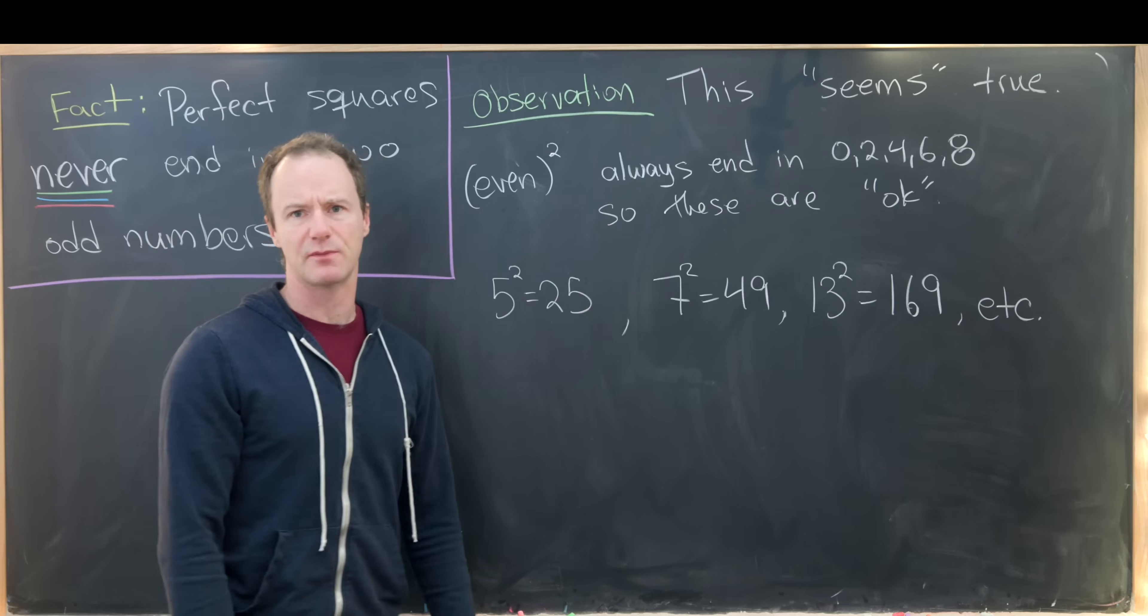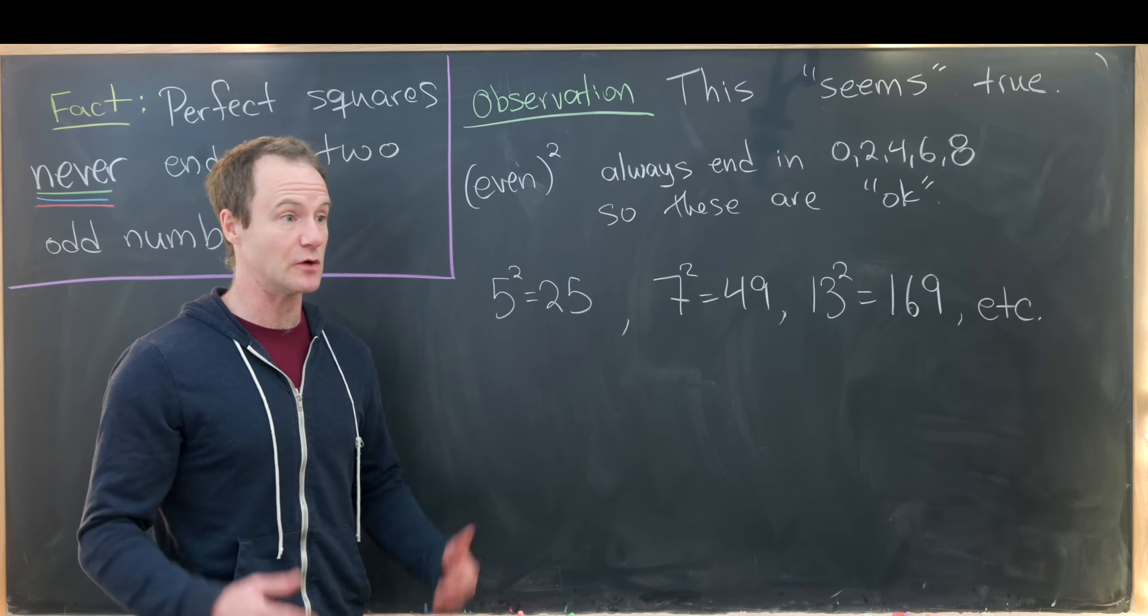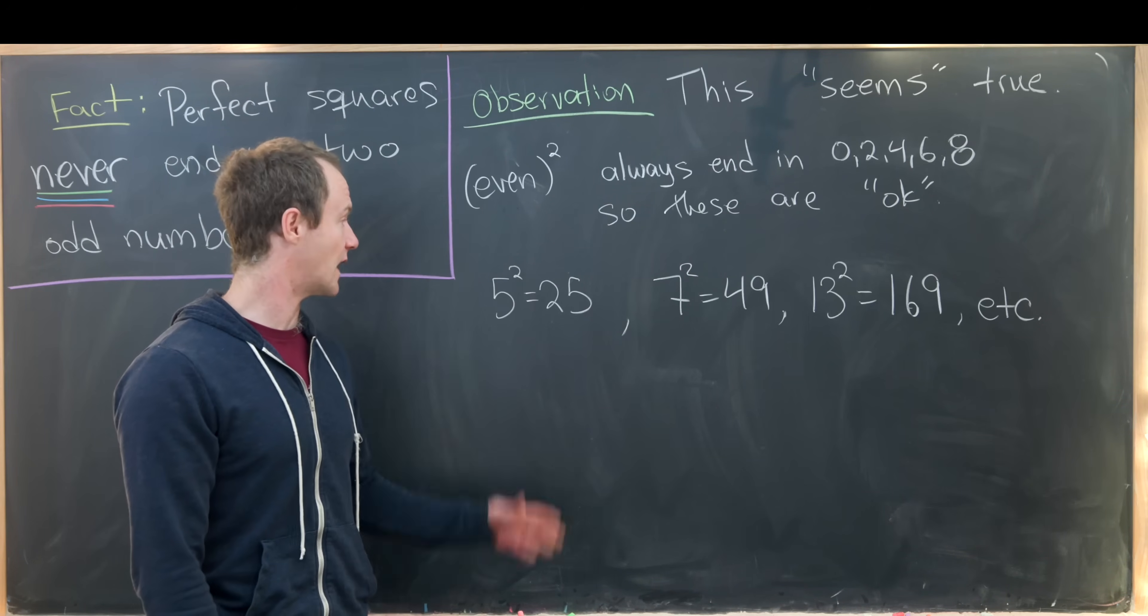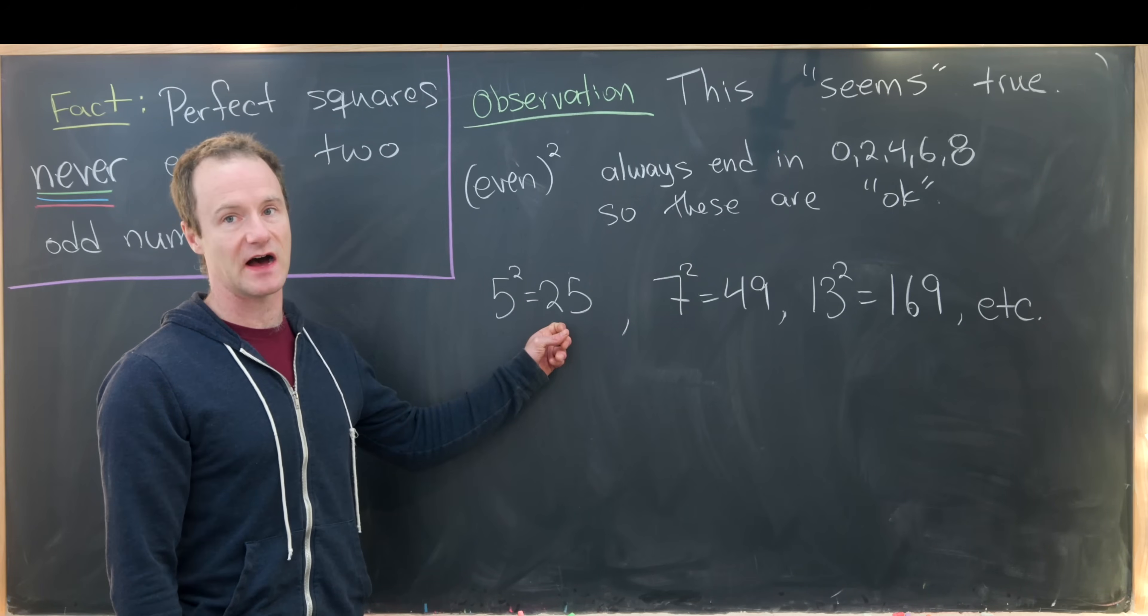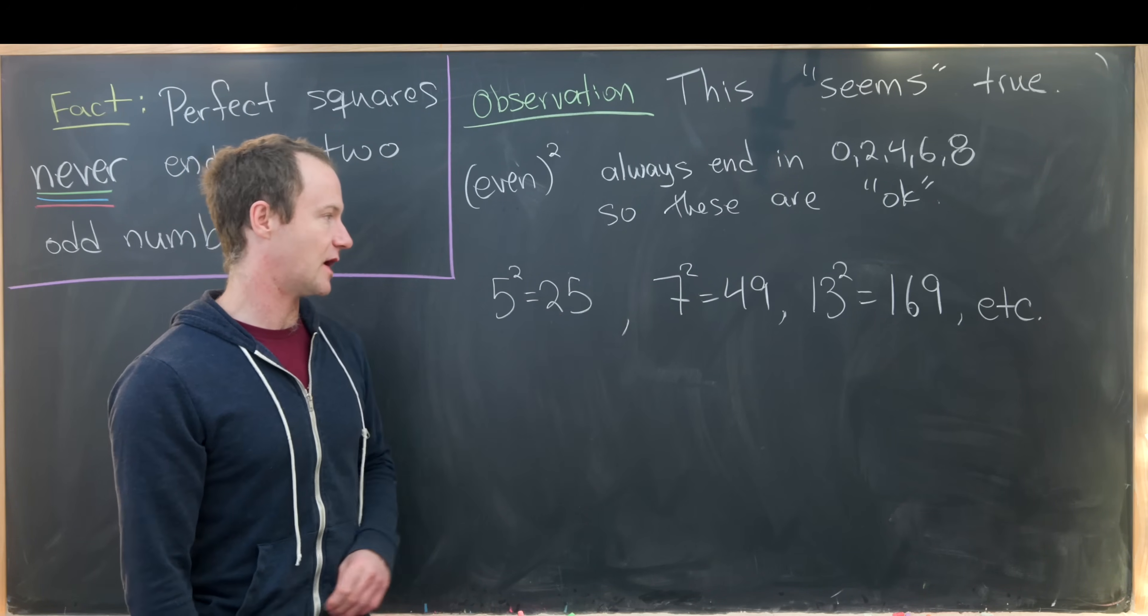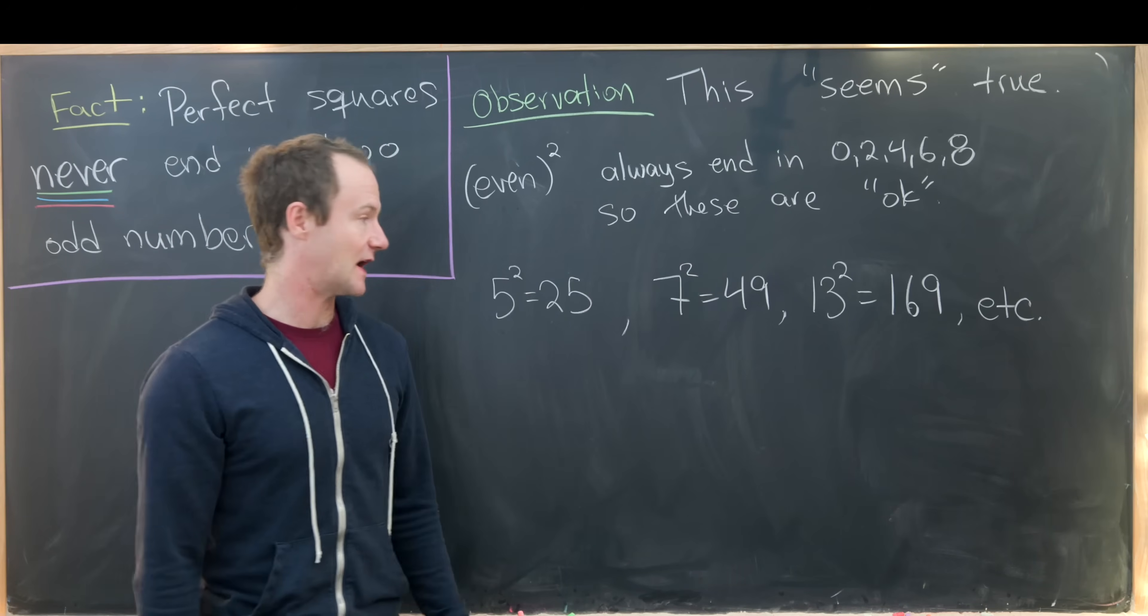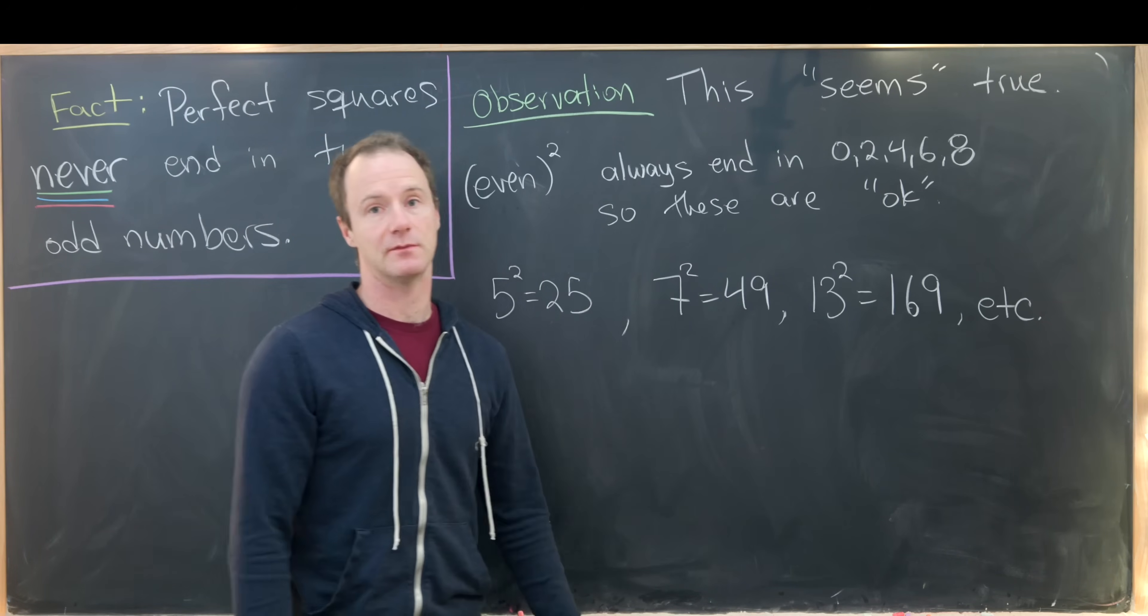So let's look at some odd perfect squares and see if those seem to follow this rule as well. And they do. Notice that five squared is 25. We have an even number and an odd number. Seven squared is 49. We have an even number and an odd number.